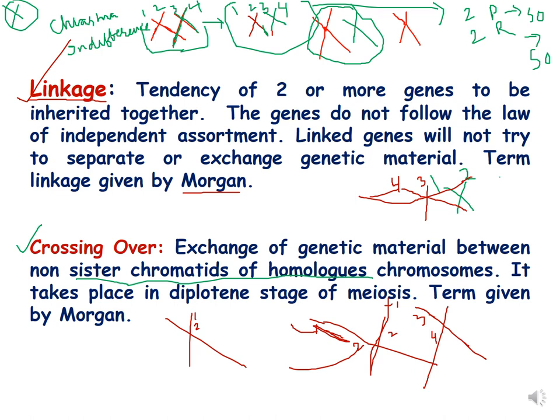What is crossing over? It is the exchange of genetic material between non-sister chromatids of homologous chromosomes. It takes place in the diplotene stage of meiosis, and the term was given by Morgan. When crossing over takes place between non-sister chromatids of homologous chromosomes, recombination takes place.